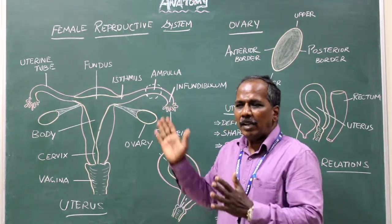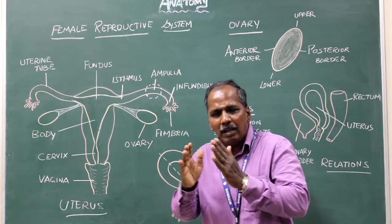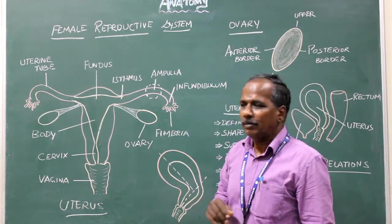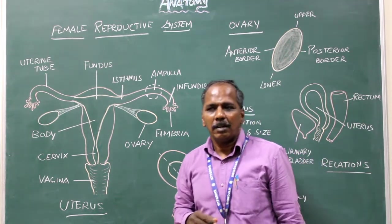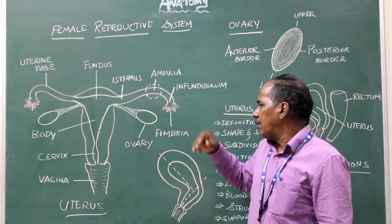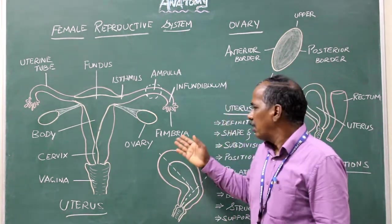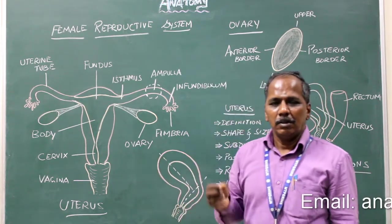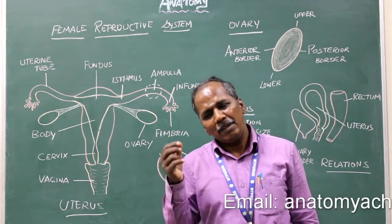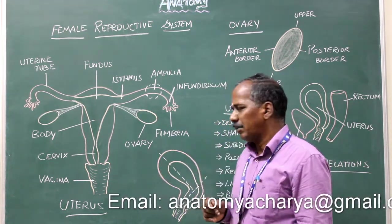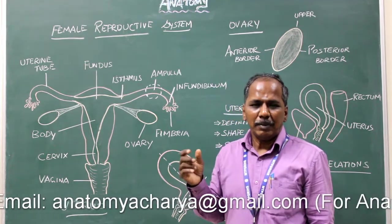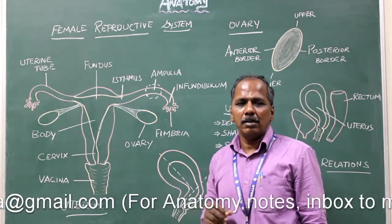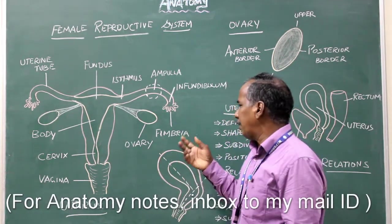The infundibulum is funnel-shaped and is near the lateral end where the uterine tube is dilated. At the end of the uterine tube, there are finger-like projections known as fimbriae. Blood supply: ovarian artery and uterine arteries. Nerve supply: sympathetic — T11 to L2 segments of the spinal cord; parasympathetic — pelvic splanchnic nerves.